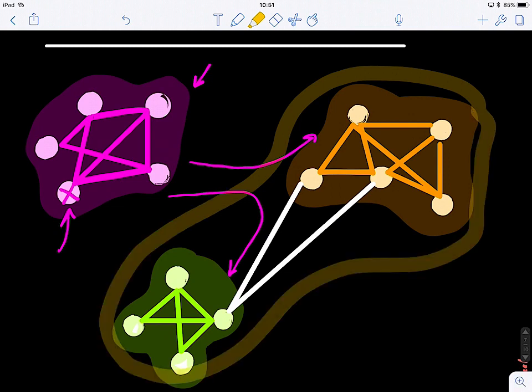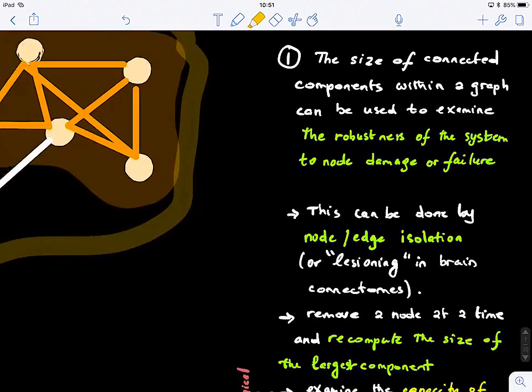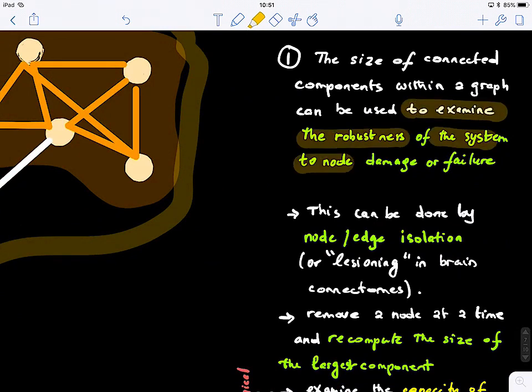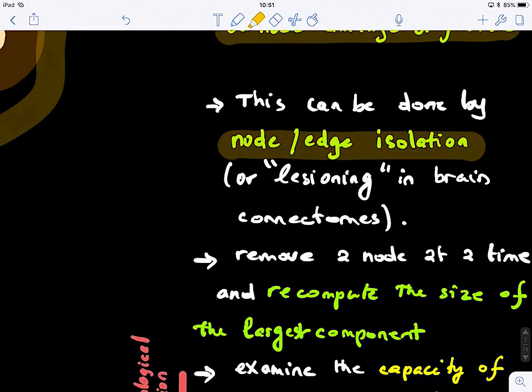Okay, there are different ways of formalizing this. So here, the size of connected components within a graph can be used to examine the robustness of the system to node damage or failure. So this can be done by either removing edges or nodes. So this is what we call isolating. For example, in the brain, you're lesioning some connections. So if there is like a stroke lesion in the brain, you're breaking down connections between different parts or anatomical regions of the brain.